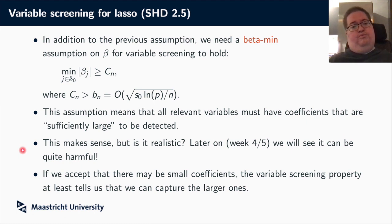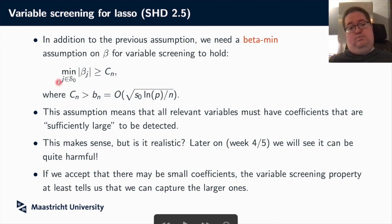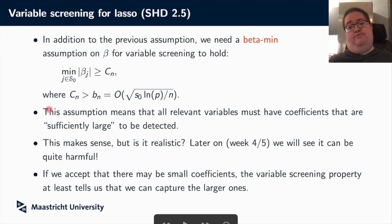There is one very important assumption we will need, called the beta-min condition. The beta-min condition tells us that all relevant betas — in particular the smallest one, the minimum over all j in the set of relevant variables — must have absolute value larger than some lower bound C of n. This lower bound can be a function of n and p but should be bounded away from zero. In terms of interpretation, this means all relevant variables should have coefficients sufficiently large to be detected.